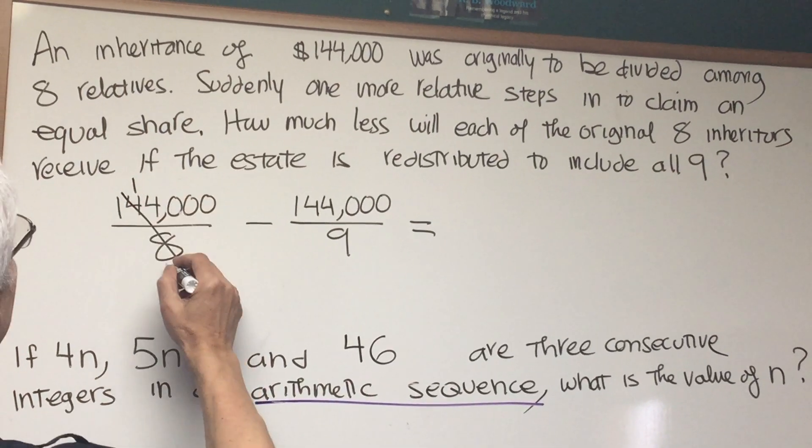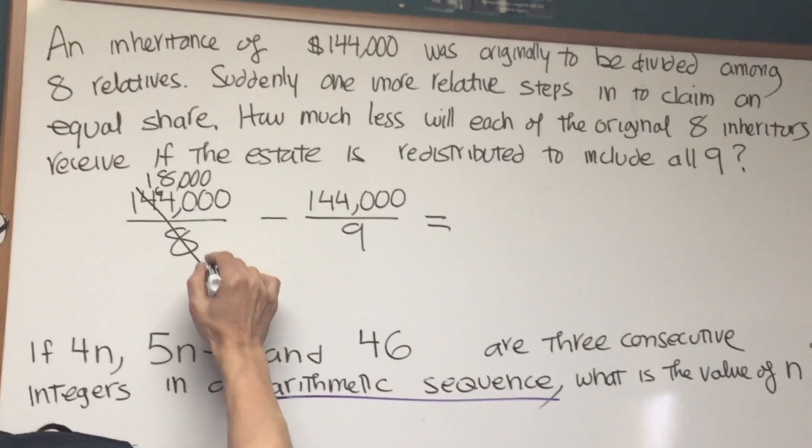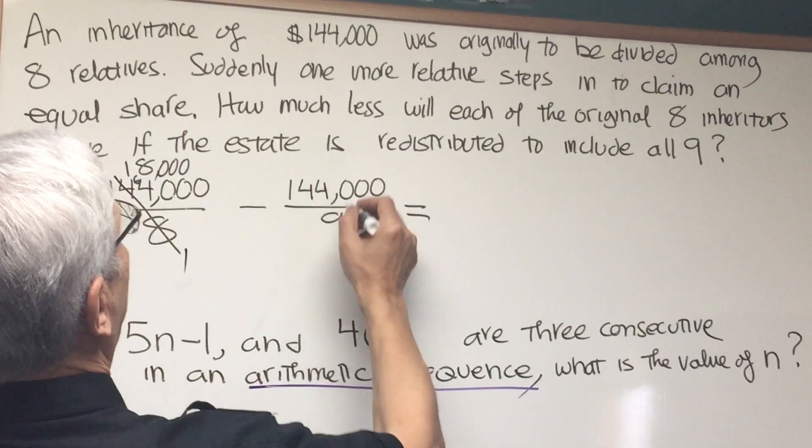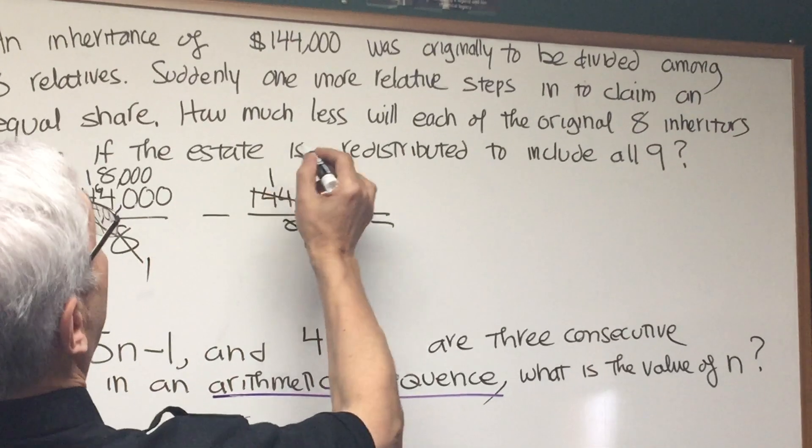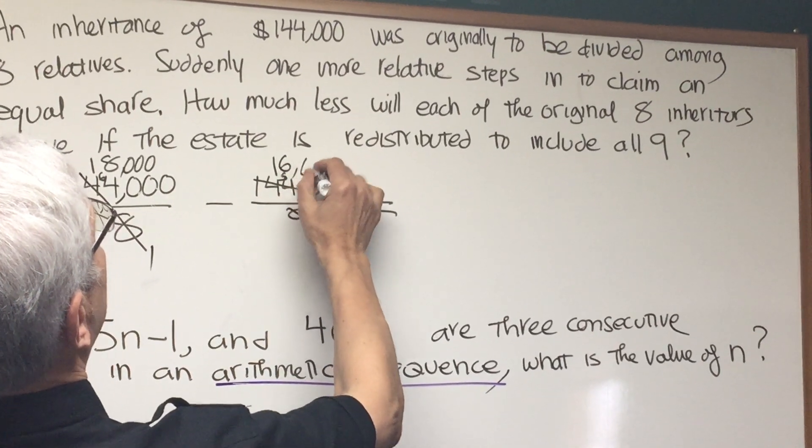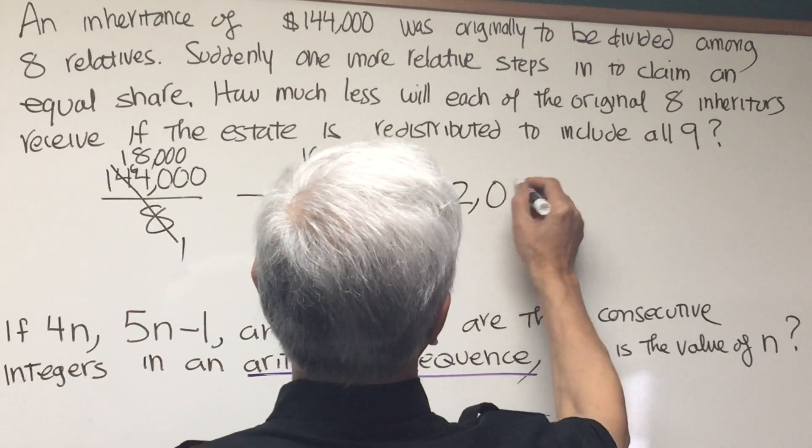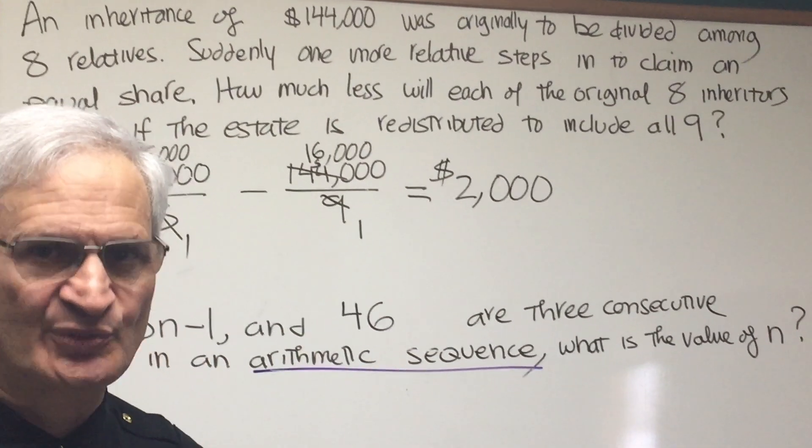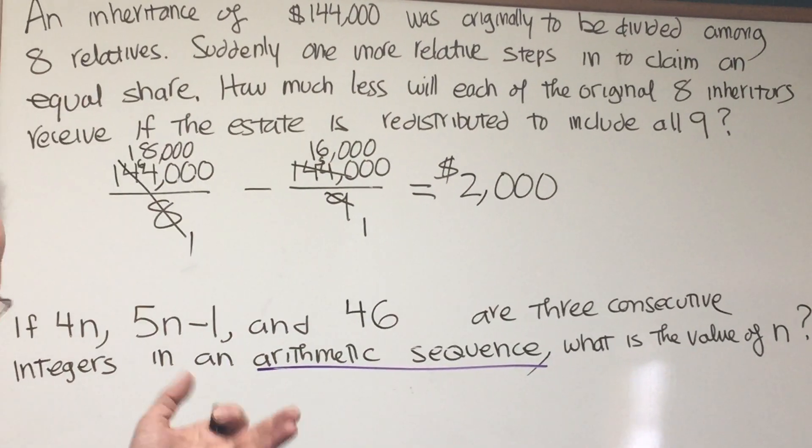Eight goes into 14 once with six left over. Eight goes into 64 eight times, so that's 18,000. All right, now let's go to here. Nine into 144. Nine goes into nine once. Nine goes into 14 once with five left over. Nine goes into 54 six times, so we have 16,000. 18,000 minus 16,000 is 2,000, and that's how much less those original eight inheritors will receive, with the ninth one being introduced and everything redistributed.